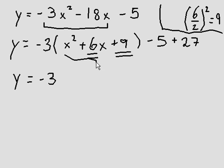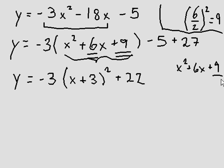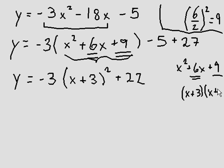So negative 3 — this simplifies to x plus 3 squared. Negative 5 plus 27 is positive 22. Why is it x plus 3 squared? We can always take the middle term divided by 2 to get this term immediately. Another way is to see what two numbers multiply to positive 9 and add up to 6 — positive 3 and positive 3 — meaning we factor this into x plus 3 times x plus 3, which is x plus 3 squared.